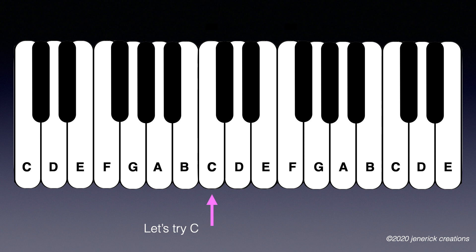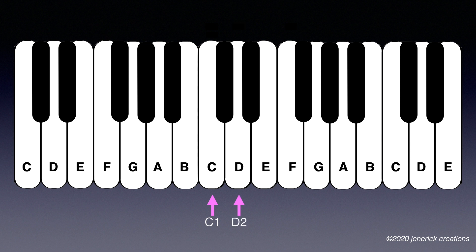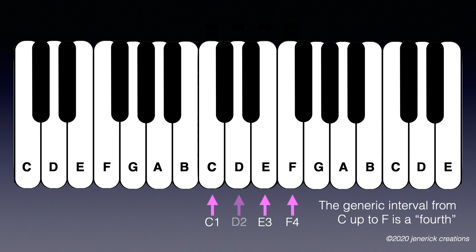Let's try C up to F. C is 1, D is 2, E is 3, F is 4. The generic interval from C up to F is a fourth.